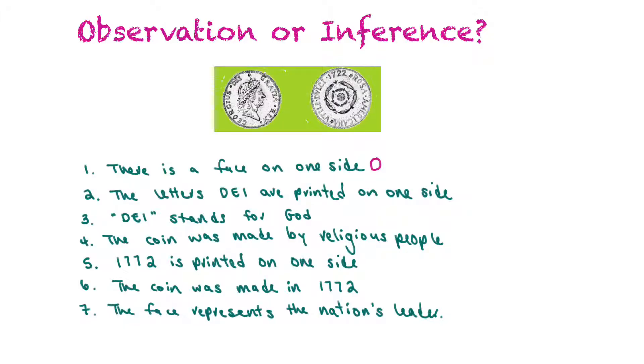Our next statement says the letters D, E, I are printed on one side of the coin, and if you look up here, right here, you can see those letters D, E, and I, so that also would be an observation. The third statement says the letters D, E, I stand for God. If this coin were written in Latin, that would indeed be true, but we don't know if this language is Latin, so we can't say that that's an observation. We're saying that's an inference based on the evidence we see on the coin.